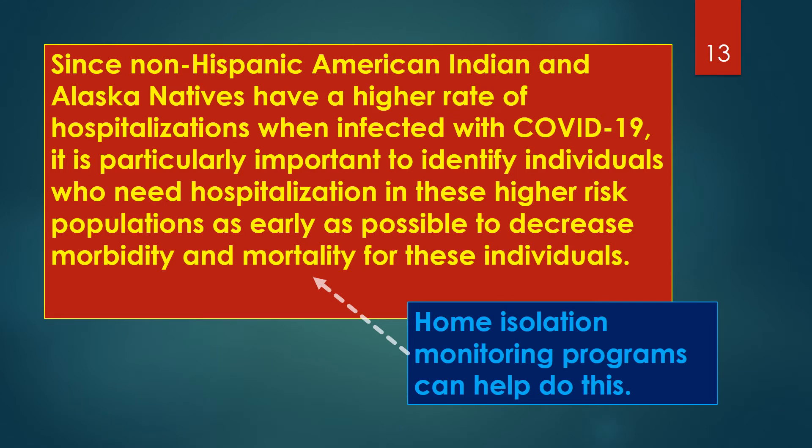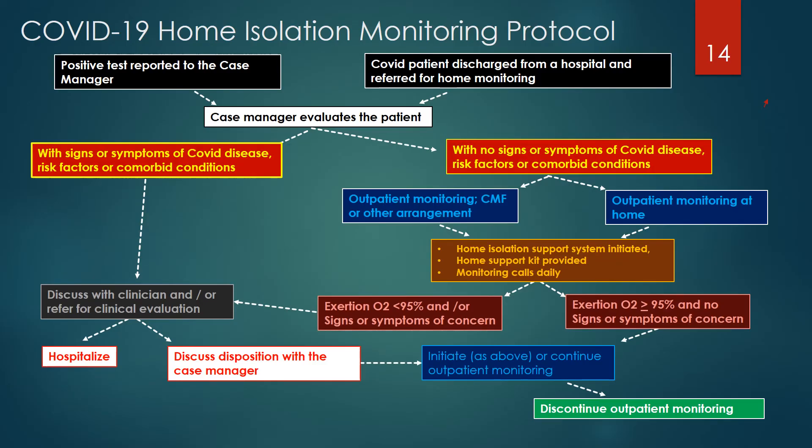Since non-Hispanic American Indian and Alaska Natives have a higher rate of hospitalizations when infected with COVID-19, it is particularly important to identify individuals who need hospitalization in these higher risk populations as early as possible to decrease morbidity and mortality. Effective COVID-19 home isolation monitoring programs can help identify these individuals early. Let's consider key components of the COVID-19 home isolation monitoring protocol.